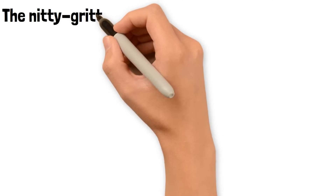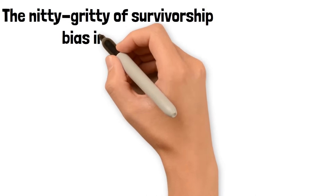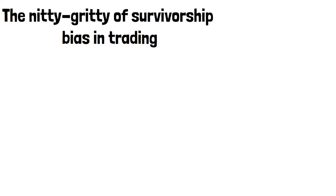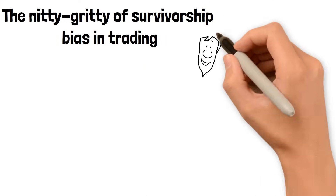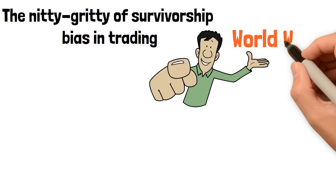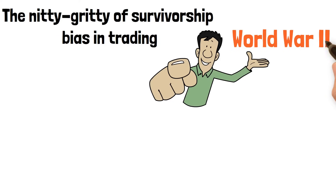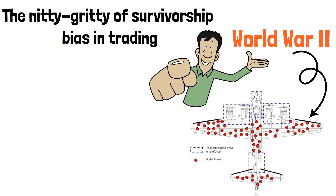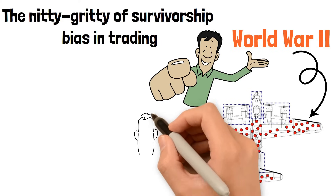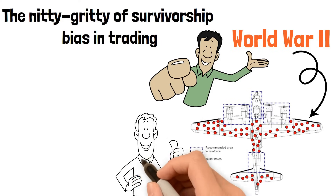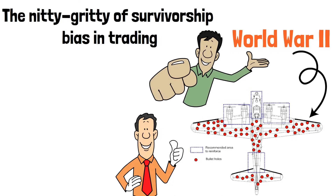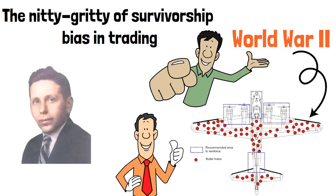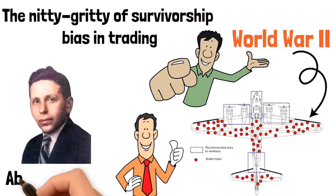Before we get into the nitty-gritty of survivorship bias in trading, let's take a step back and look at an incredible example from World War II. During the war, many returning planes displayed bullet holes in specific patterns. It seemed logical to reinforce these areas, right? After all, those planes made it home safely. But here's where it gets interesting.